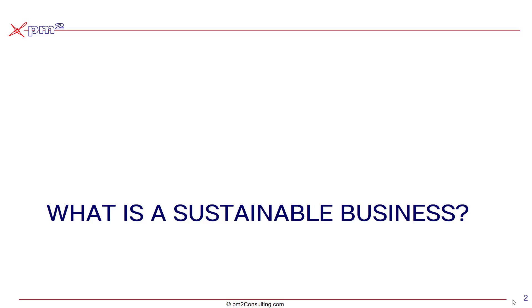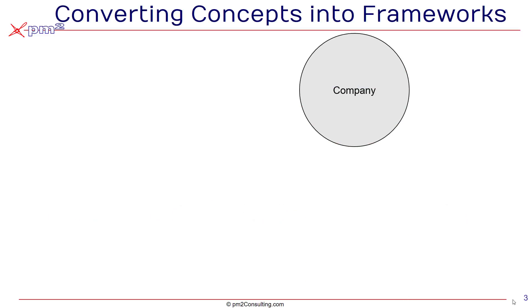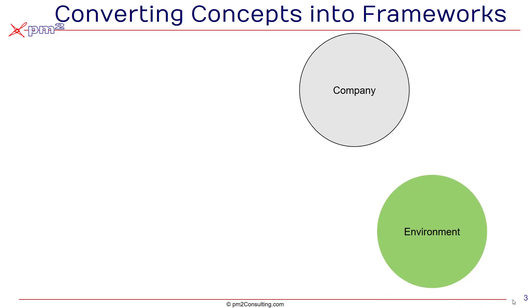Before we get underway, I should probably give you a quick briefer on what is a sustainable business. We're all familiar with the triple bottom line — the bottom line that says we should be looking at how the company is performing, but also how it impacts and consumes resources from the environment, and how it impacts and consumes resources from society.